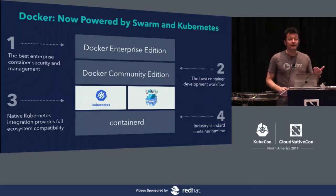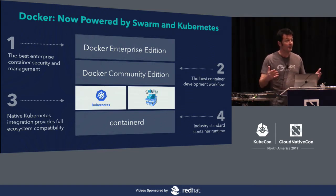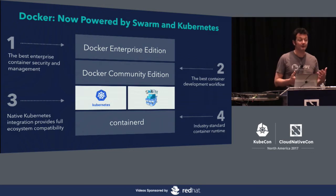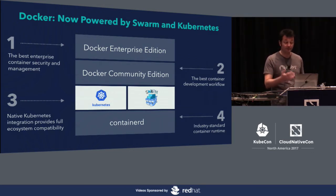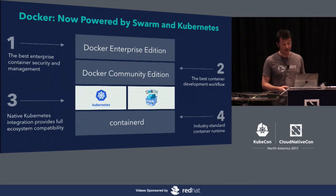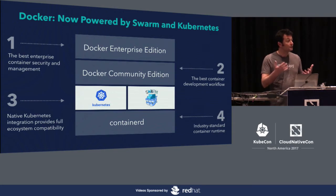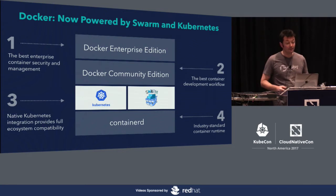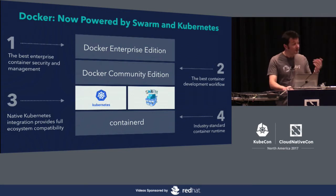One of the big news announced at DockerCon this year — and this is why so many Docker engineers are at KubeCon — is that in addition to Swarm, in the next version of Docker Enterprise Edition, we're also going to support Kubernetes as a choice of orchestrator. This gives you the best enterprise container security management with Docker EE, the best container development workflow with Docker CE, and native Kubernetes bits so the entire Kubernetes ecosystem can run with it, backed by ContainerD 1.0.